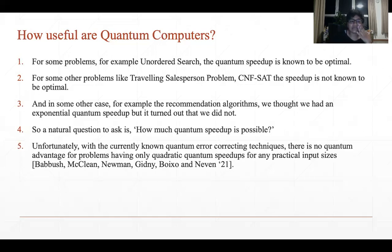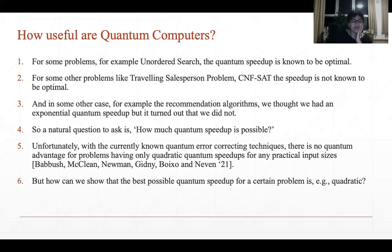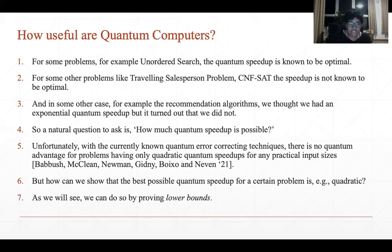Another unfortunate result is that with current known quantum error-correcting techniques, there is no quantum advantage for problems having only quadratic quantum speedups for any practical input sizes. This was a recent result by Babbush et al. So how can we show that for certain problems, the best possible quantum speedup is, say, quadratic? We will see that we can do so by proving lower bounds.